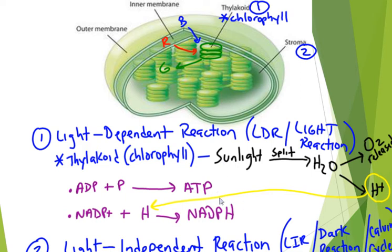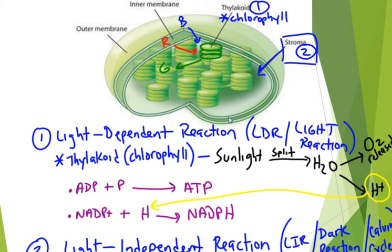We are going to shift focus to our second reaction within photosynthesis. It is called the light independent reaction. The LIR is also sometimes referred to as the dark reaction, just because sunlight doesn't take place, and probably more commonly known as the Calvin cycle. We are focusing our efforts today in the stroma, which is the fluid that surrounds the thylakoid — almost like the cytoplasm of the chloroplast.